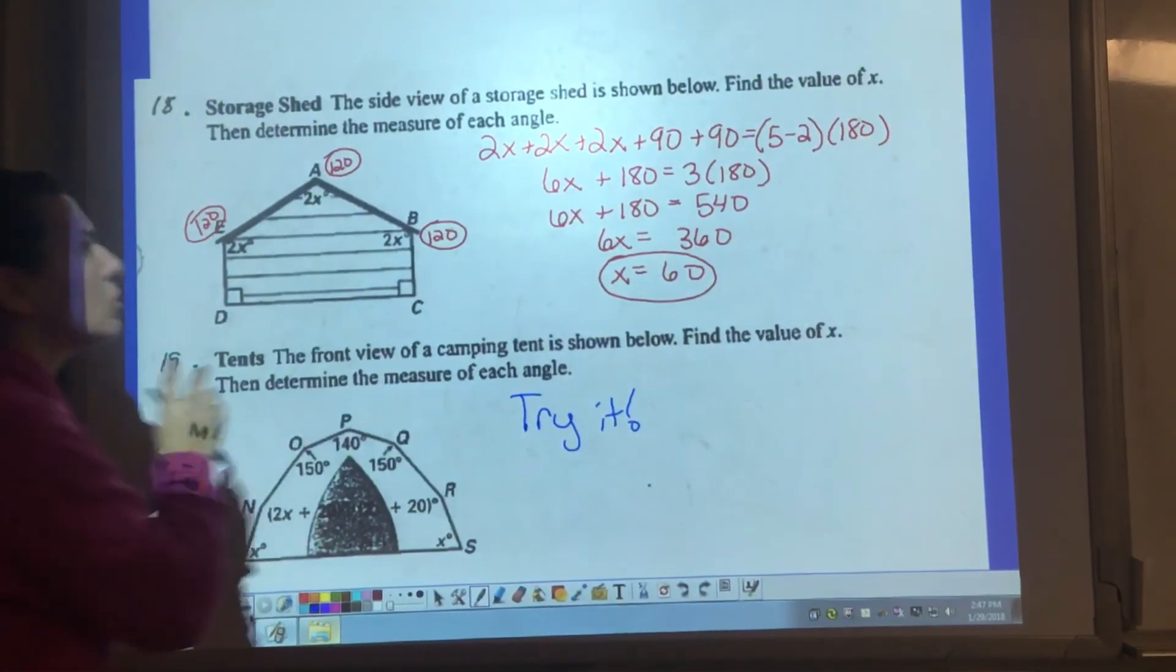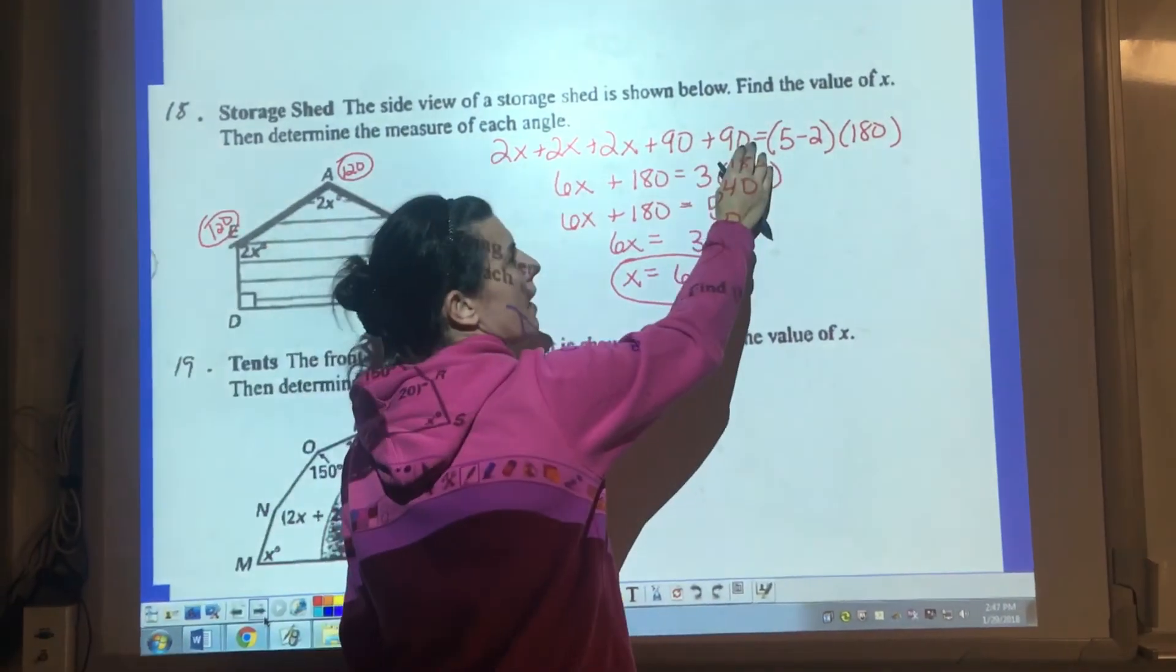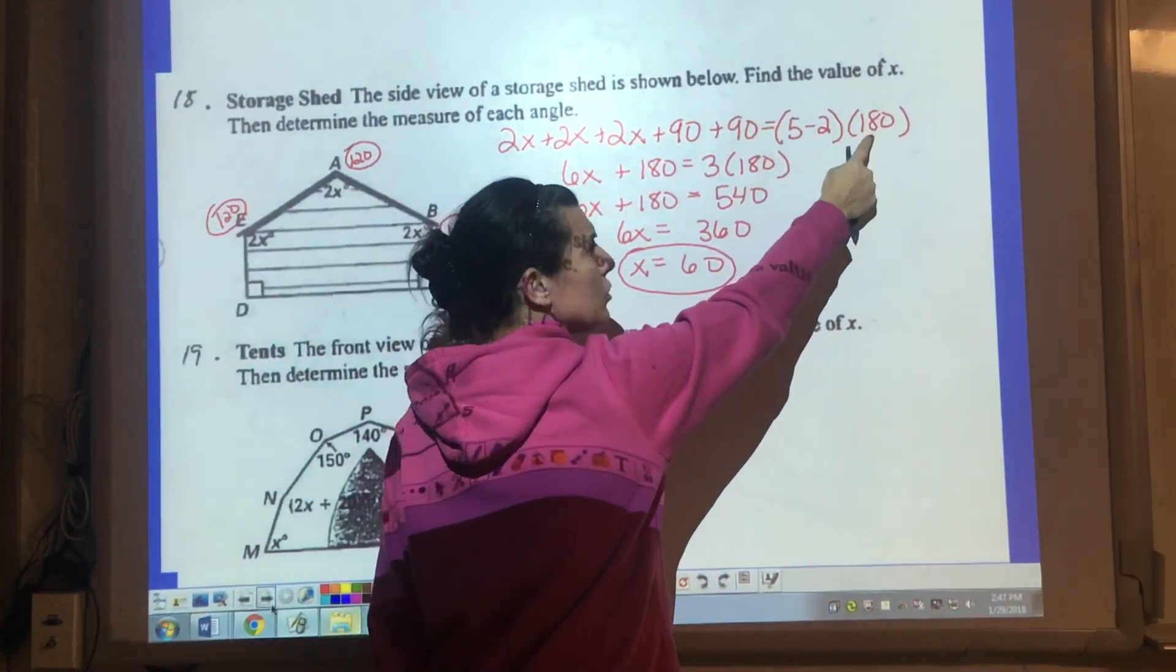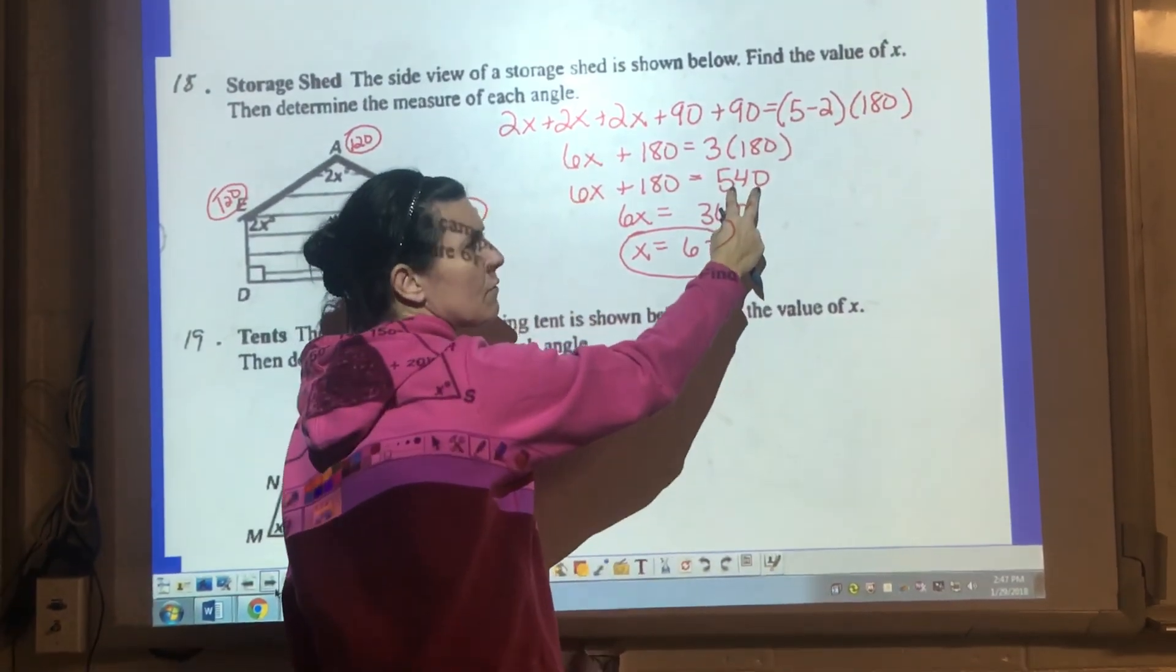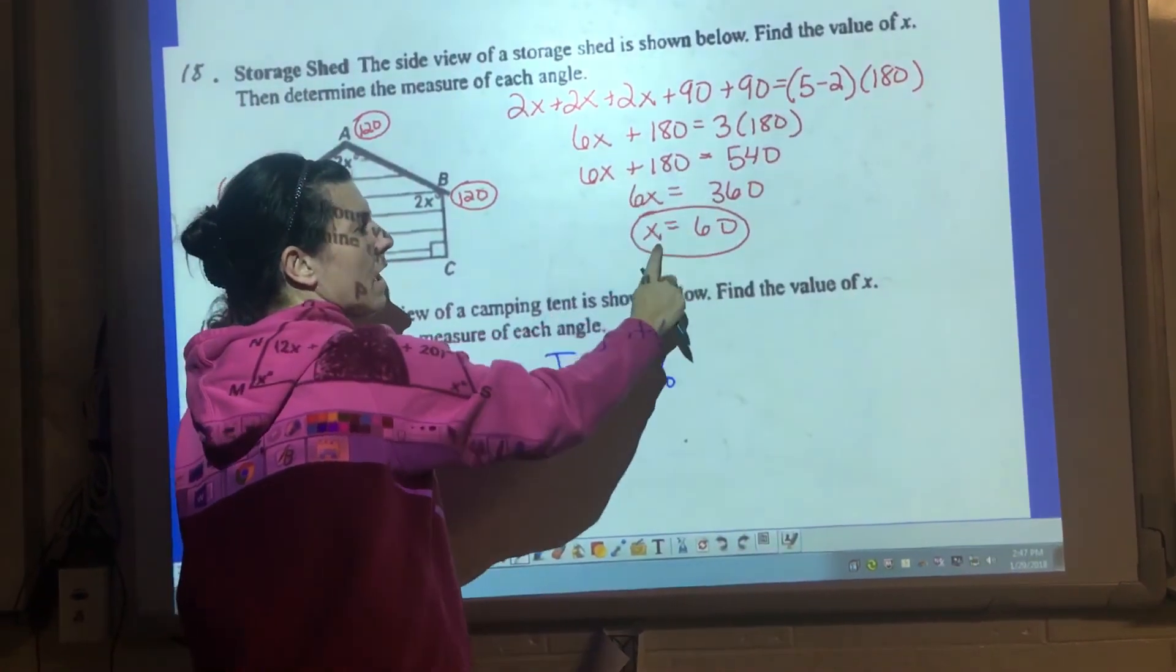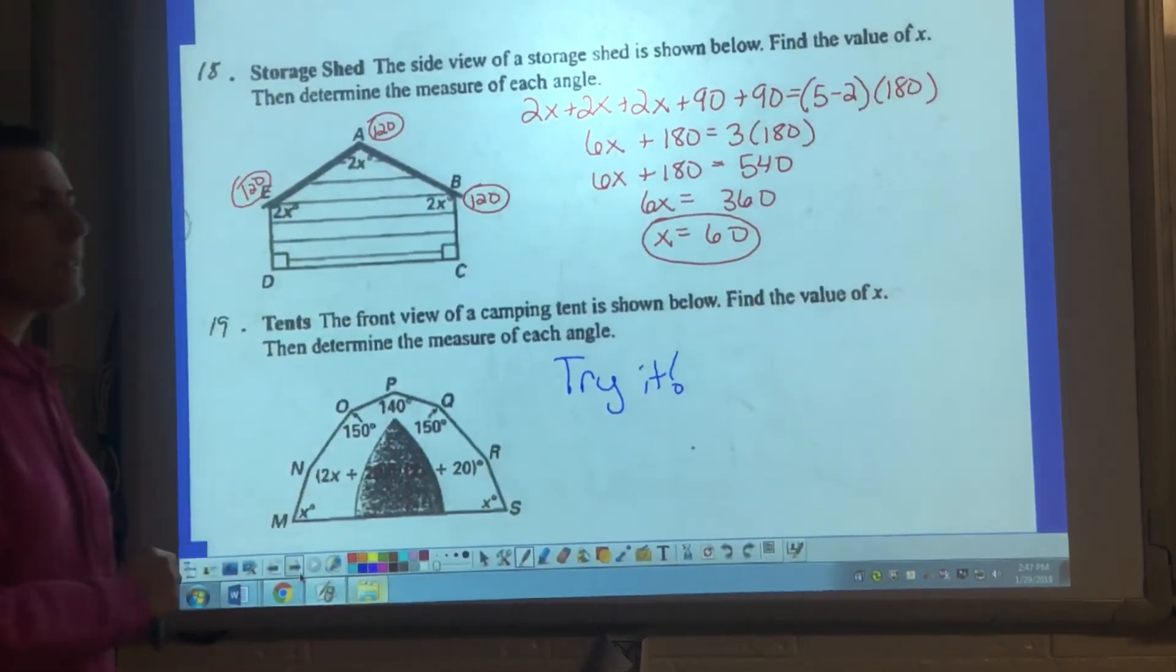So I said all of those angles added together is that formula. I know there's five angles. Five minus two times 180 will give me that sum of 540. On the left-hand side, I simplified. I got 6x plus 80. I end up with x equals 60.